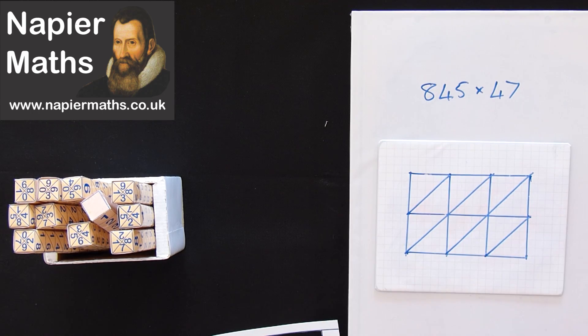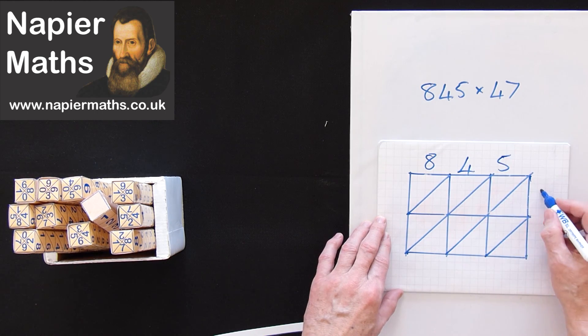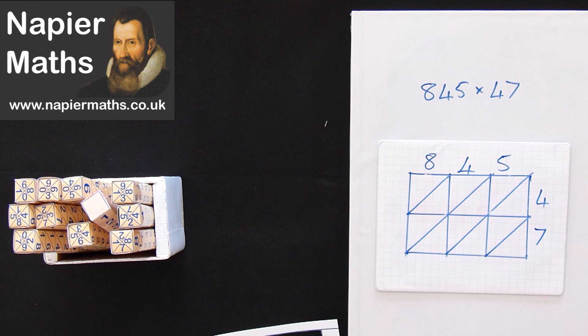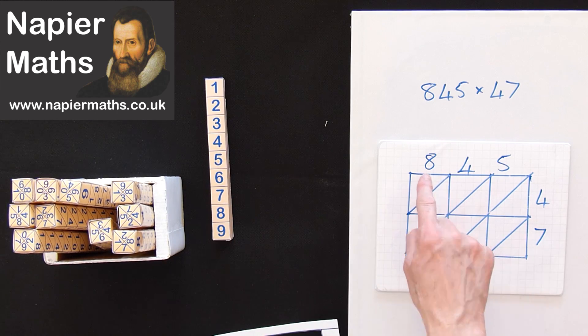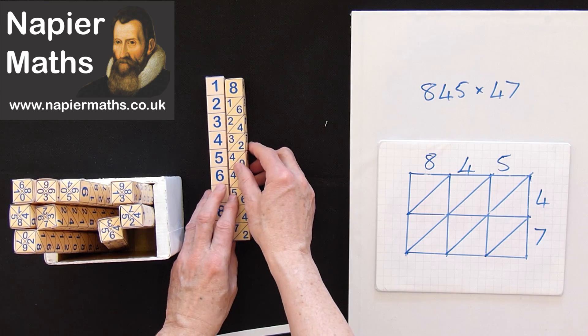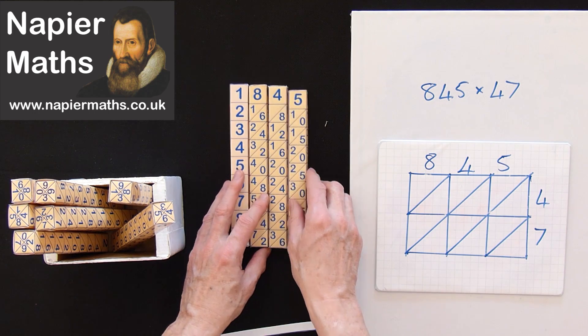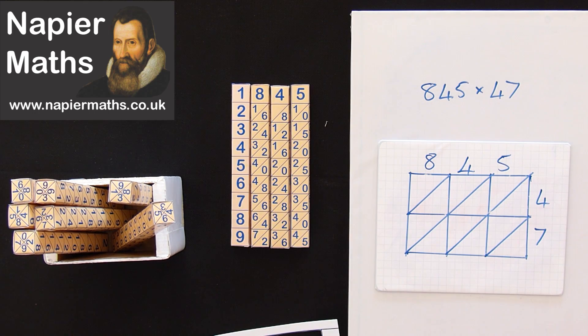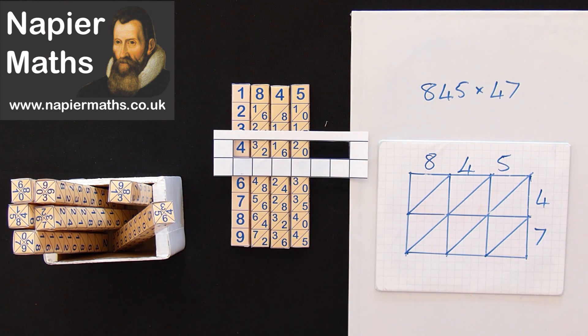Now we're ready to start. We're multiplying 845 by 47. Now to get the bones, we'll need to get an 8, a 4 and a 5. We're going to multiply by 40 first, so we've got to look at 4.